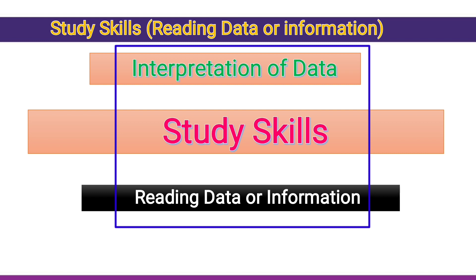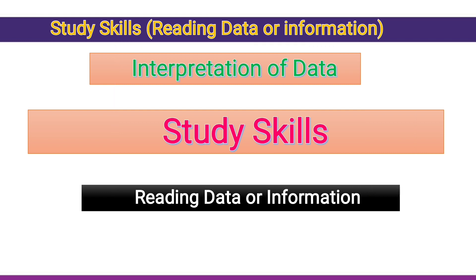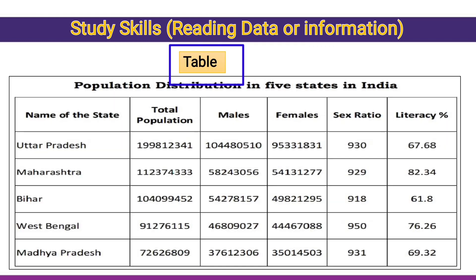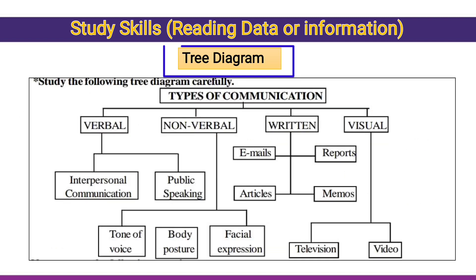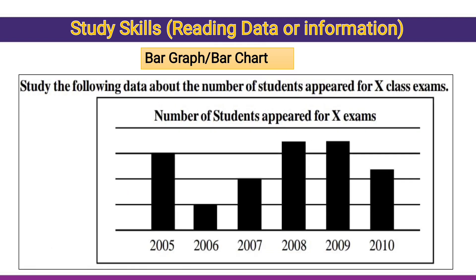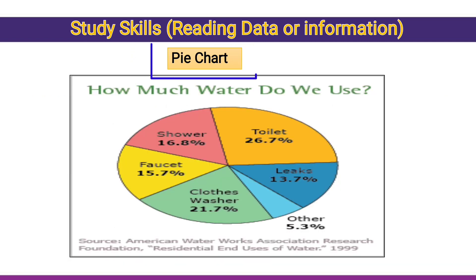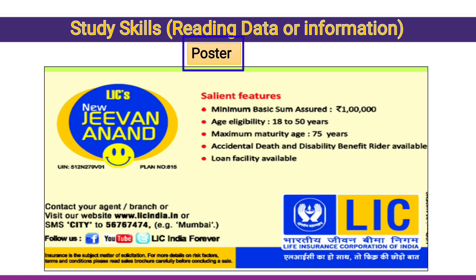The study skills contain: tabular form (table), tree diagram, bar graph or bar chart, pie chart or pie diagram, and poster. By giving these kinds of data, they will ask you five questions below the study skills.